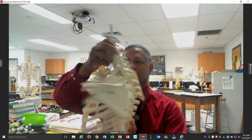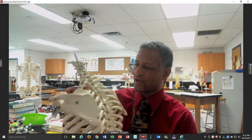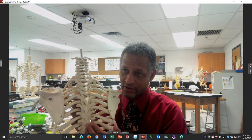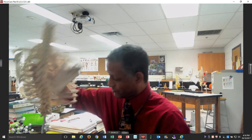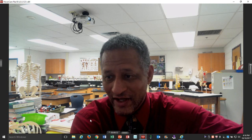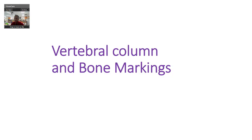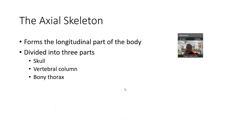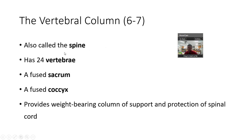Let's talk about the vertebrae. We're going to go over pictures of the cervical vertebrae — there are seven of those — the 12 thoracic vertebrae, two of the lumbar here along with the remaining three, the sacral bone or sacrum, and the coccyx bone. So that's what we're going to talk about: the vertebral column and the bone markings. The main functions are weight-bearing support and protection of the spinal cord.